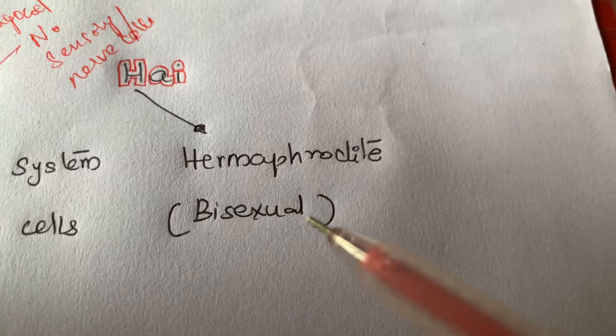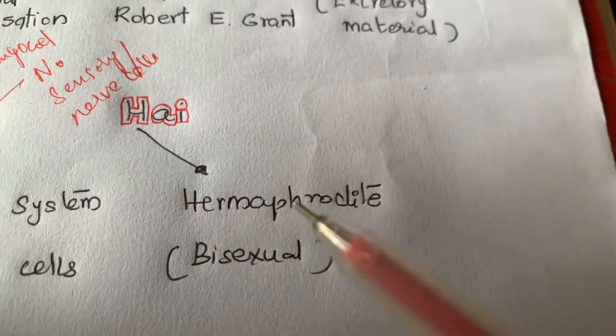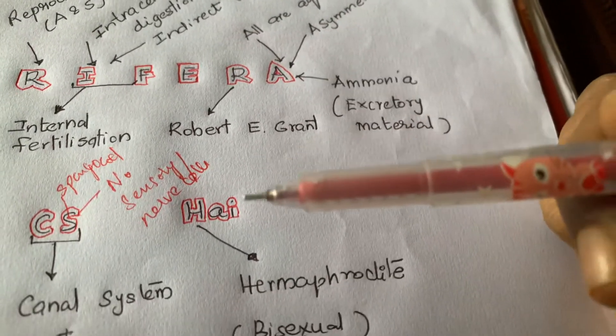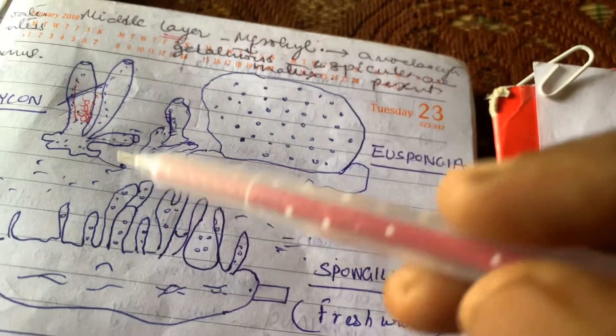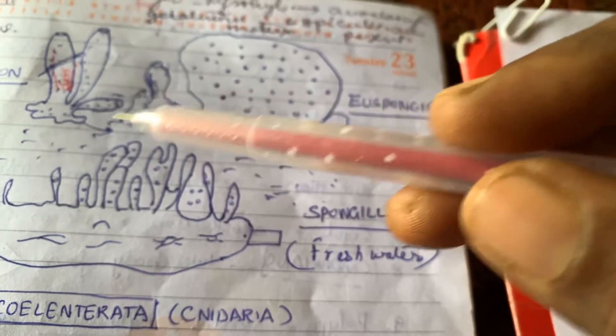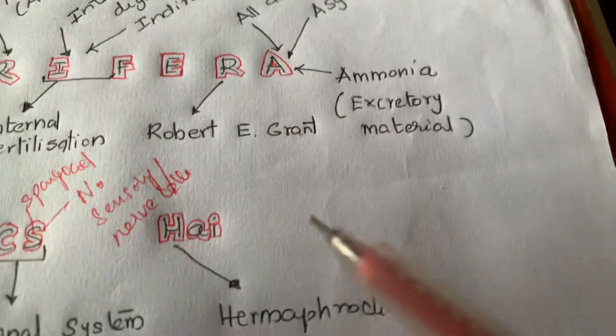And next, these animals are hermaphrodite. They are bisexual. Sexes are not separate. But fertilization takes place internally. That means cross fertilization. The sperms formed in the sponge will be released into the water and they enter into another sponge where the eggs are ready. Here the eggs are not yet ready, so cross fertilization takes place and indirect development takes place. Asexual reproduction also takes place by fragmentation and budding.